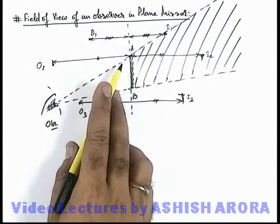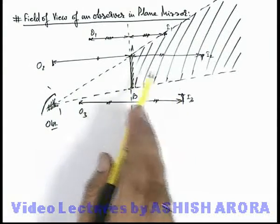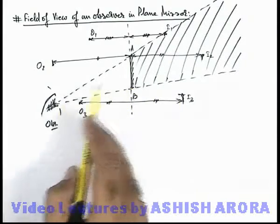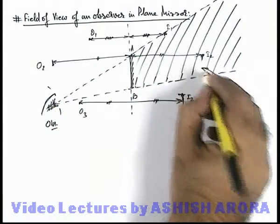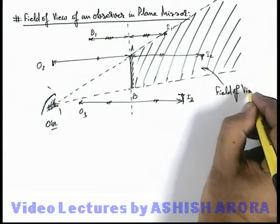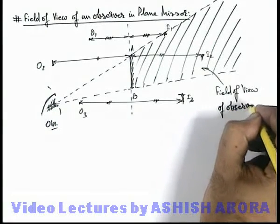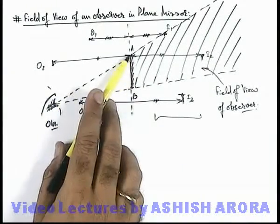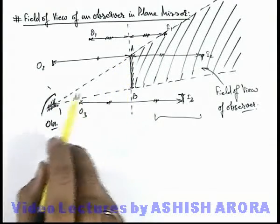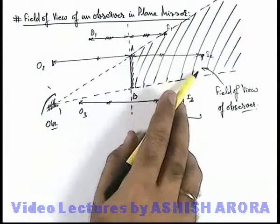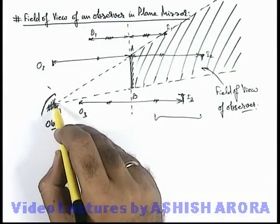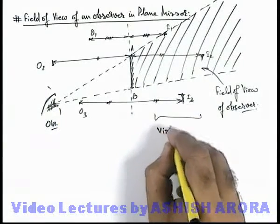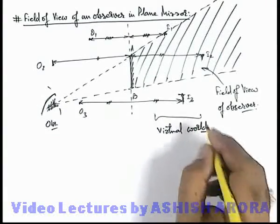Now, as I3 is outside this region, no light ray which is reflected from the mirror and appears to be coming from I3 will be incident into the eye. So this is the region which we term as the field of view of the observer. Indirectly, we can see that this is the region in which all virtual images are formed, and the observer looking into the mirror can see all images within the line of sight — that is, within the lines joining the observer's eye to the edges of the mirror. This region in which all images are formed we can call the virtual world.